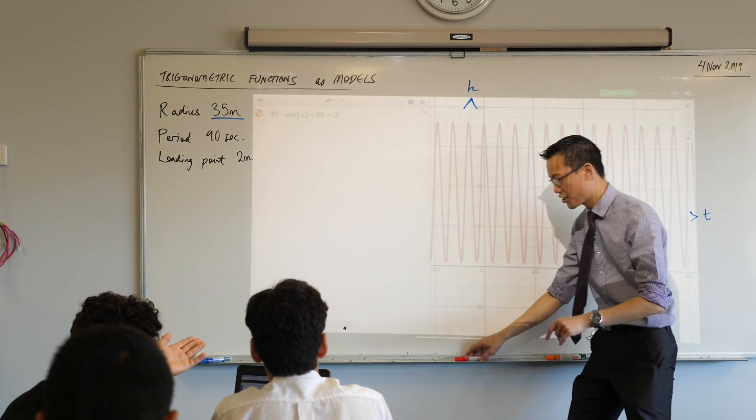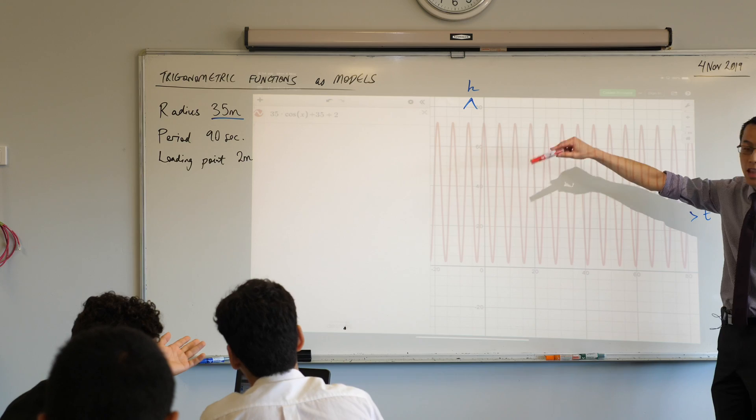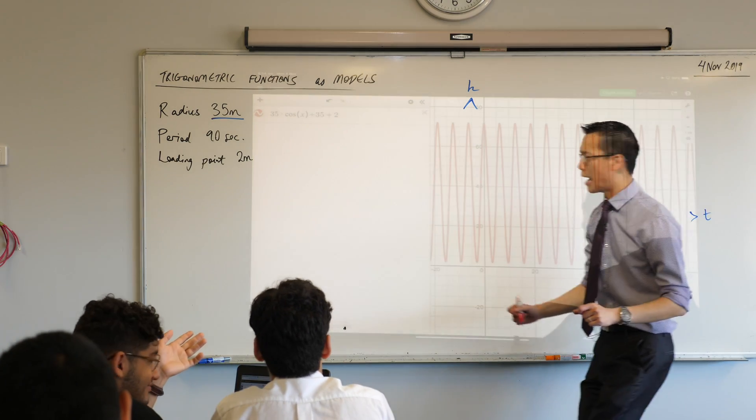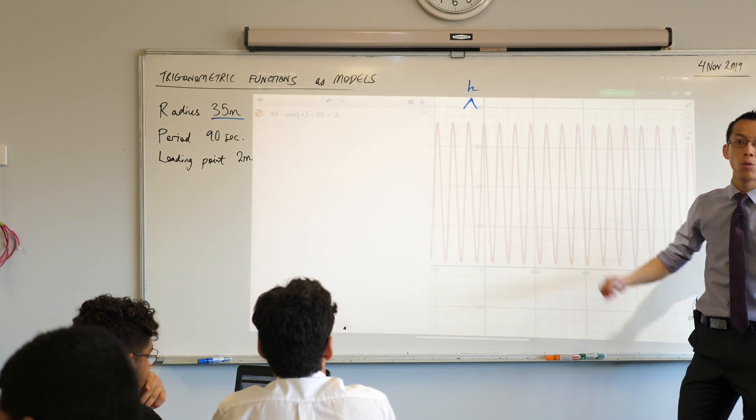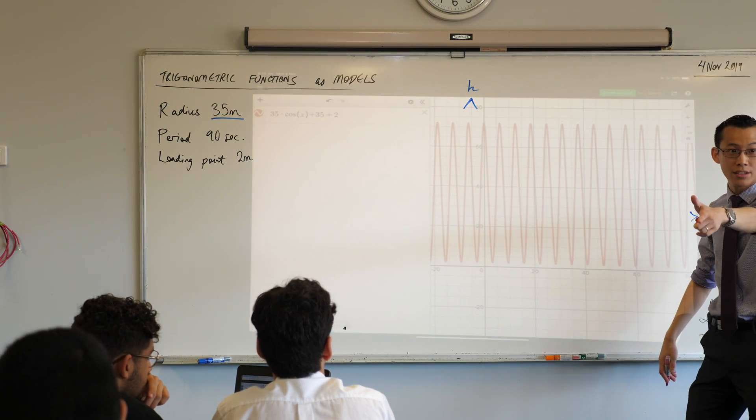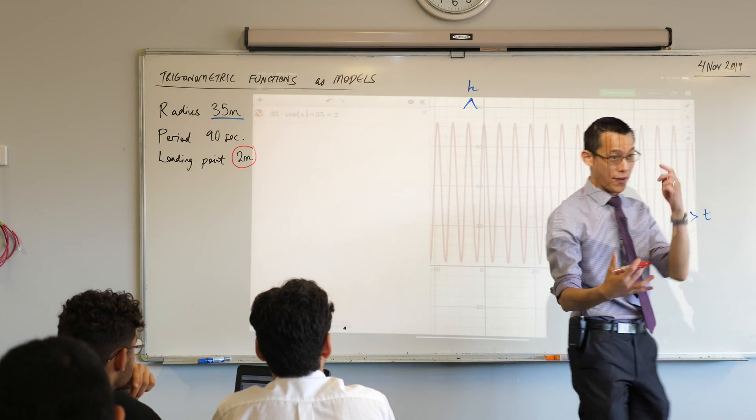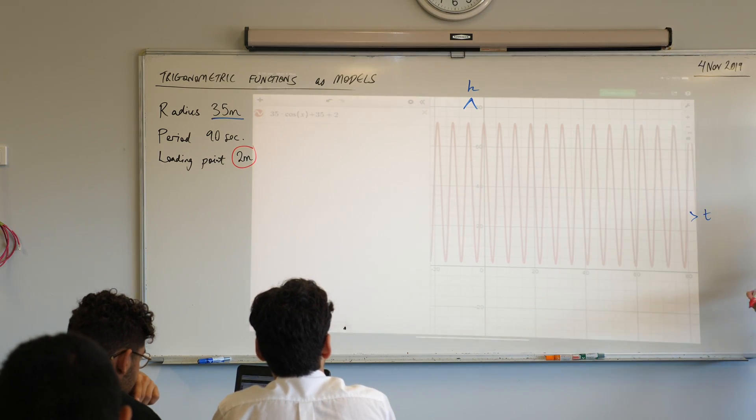And we've actually, even though I didn't mention it, we've gotten one of our other pieces of information and sort of included that. What was the piece of information? Oh, I haven't, oh, sorry. I'm about to get to the period. What's the thing I've already accounted for? Will added two. Where did he get two from? Yeah, very good. This is the lowest point on the ferris wheel. Okay, so, so far, so good.